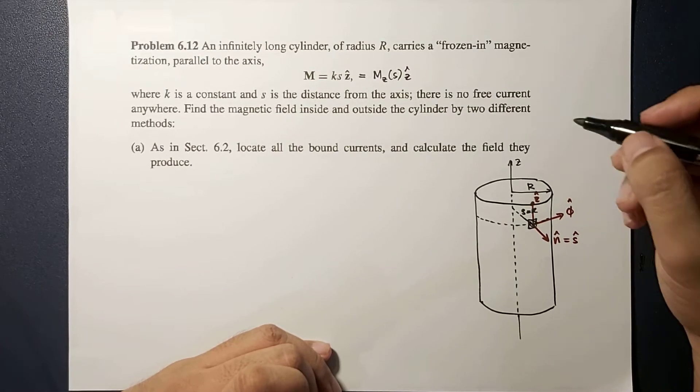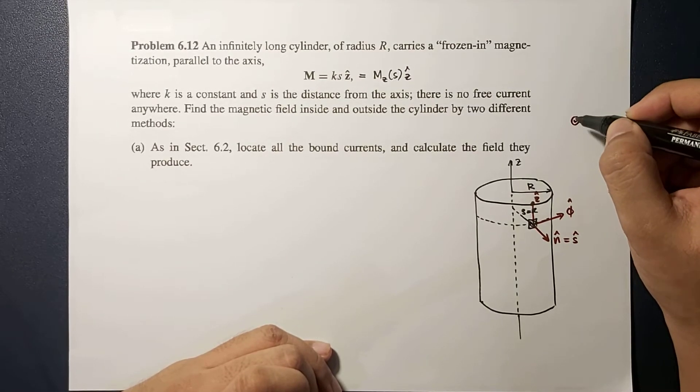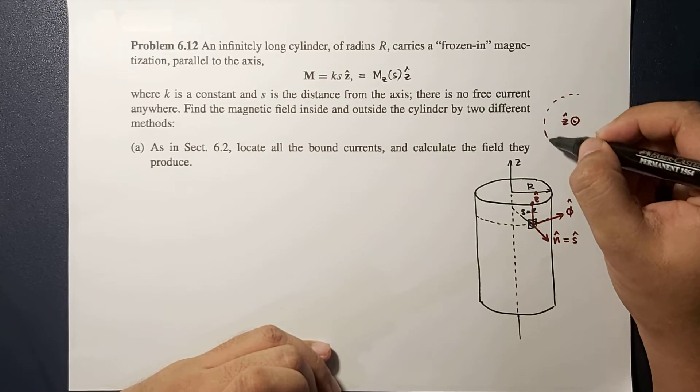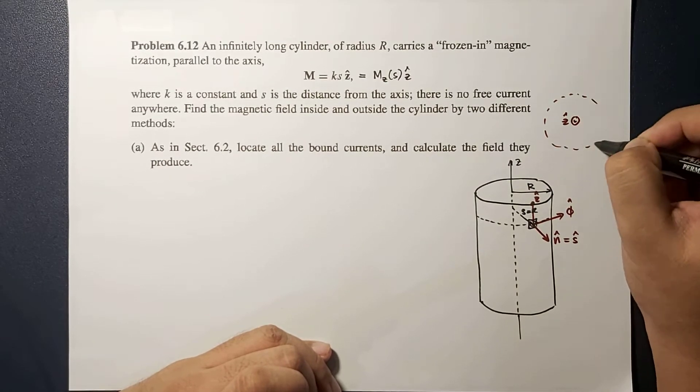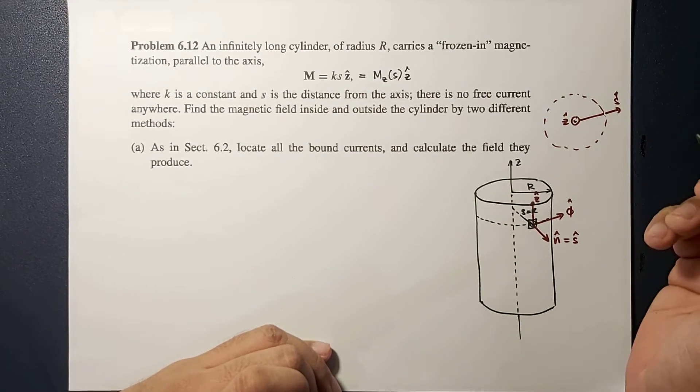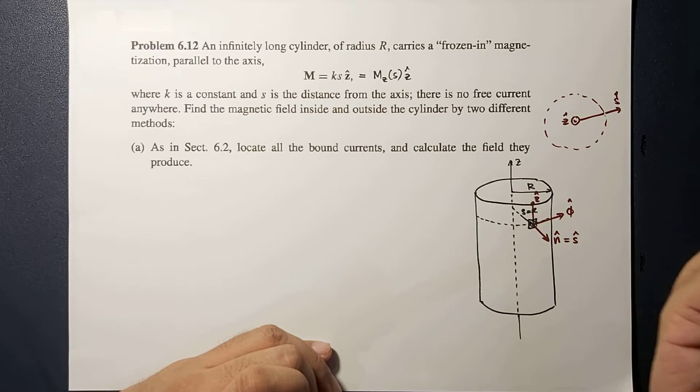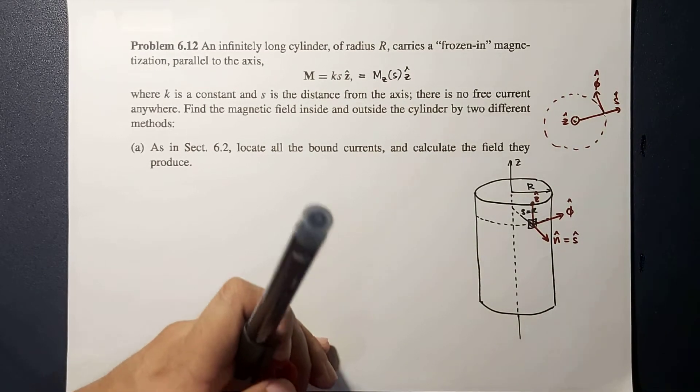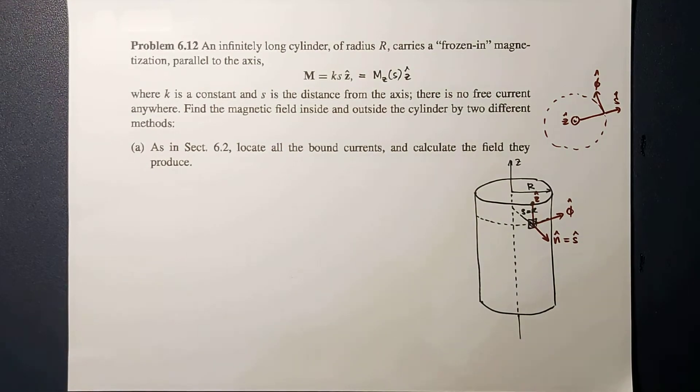So if we're going to do it in this direction, this is Z hat, this is your cylinder, this is your S hat, and this is the direction of your φ hat.